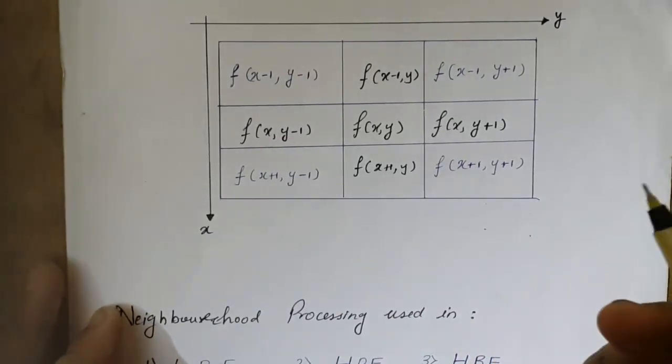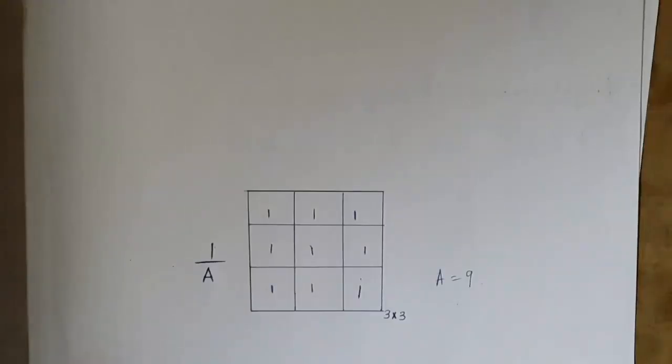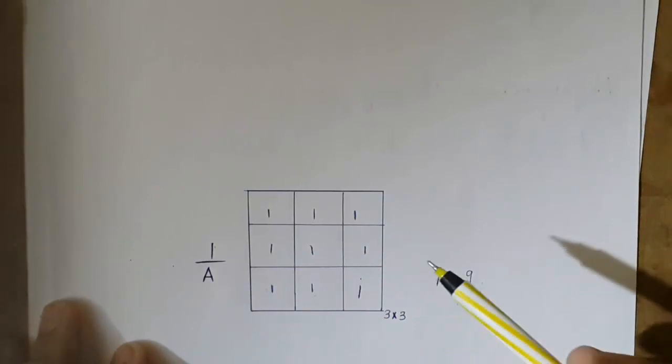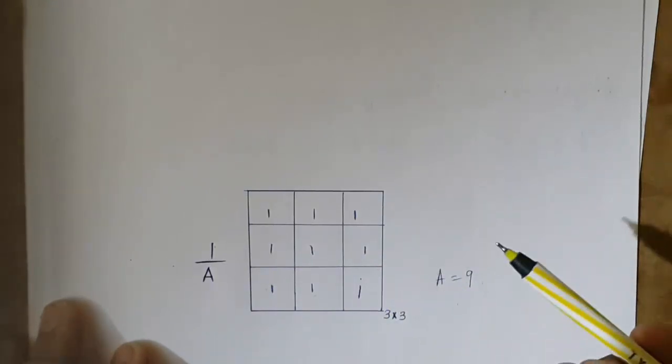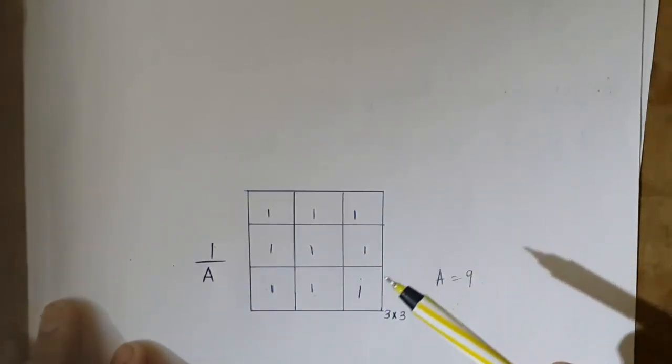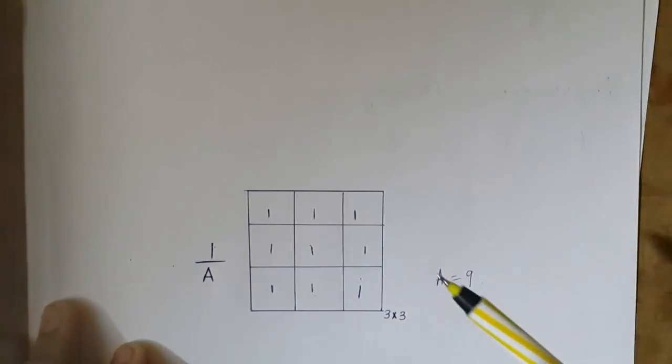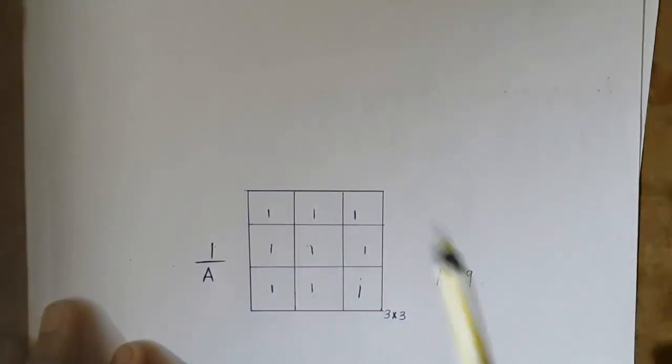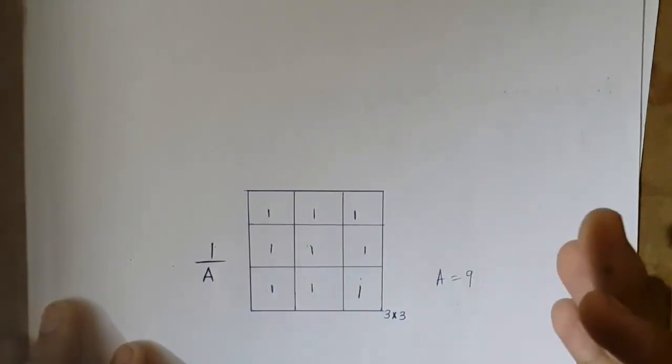Now let us see what is a mask. You can see here I have drawn a matrix which can be regarded as spatial domain representation. This is usually how masks look like. For low pass filters we have a different mask, for high pass filters there is another one.